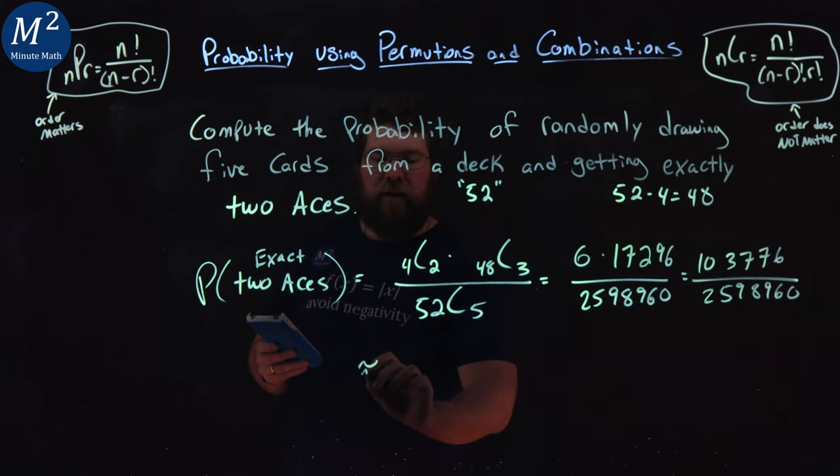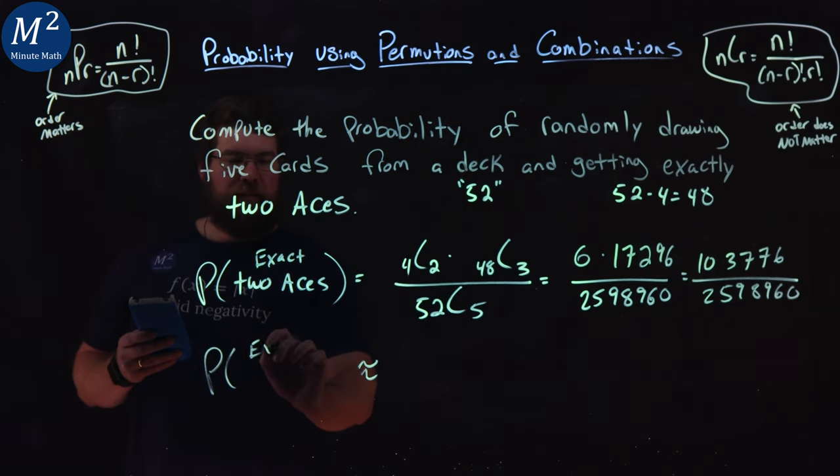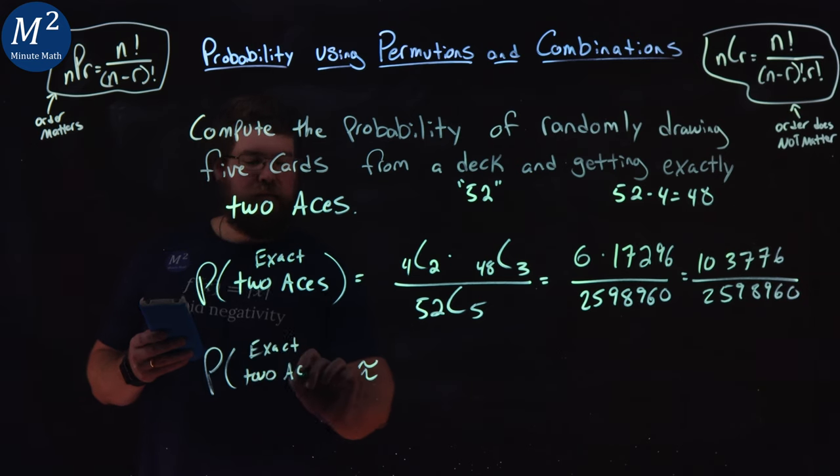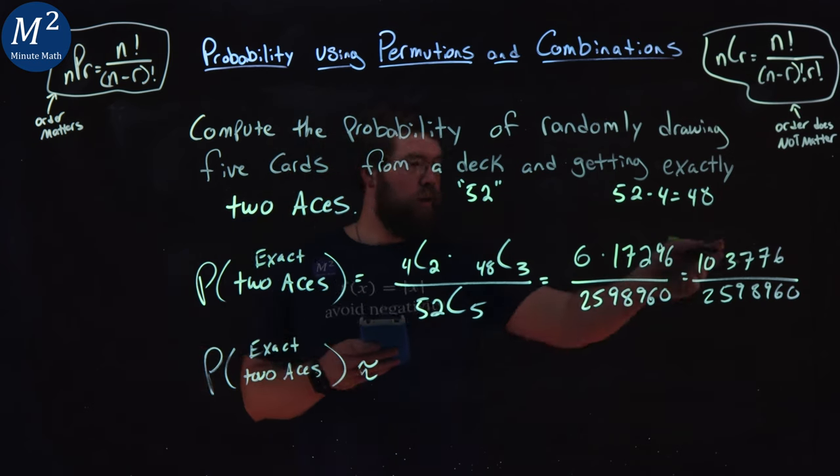So if I'm going to write that as a decimal, the probability of exactly two aces is that numerator, 103,776 divided by 2,598,960.